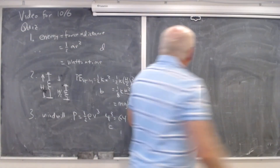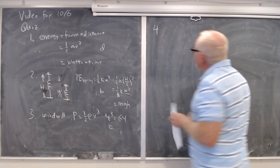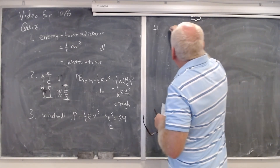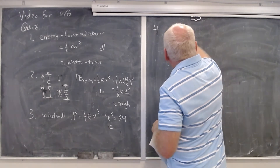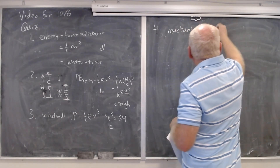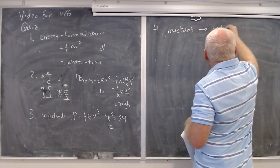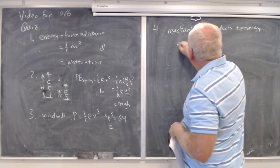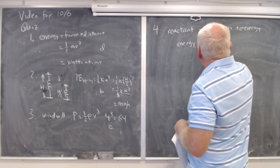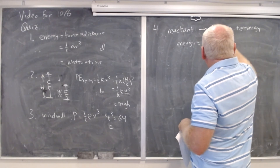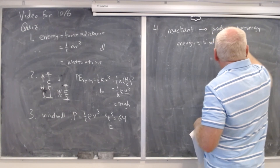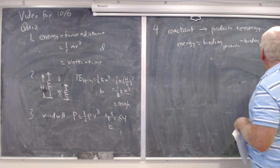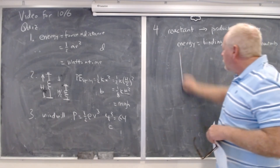Number four was meant to reinforce your understanding and fluency of the idea that if you have any sort of reaction — whether nuclear or chemical — where reactants turn into products and you release energy, that energy is equal to the binding energy of the products minus the binding energy of the reactants. You referred to the binding energy per nucleon chart.